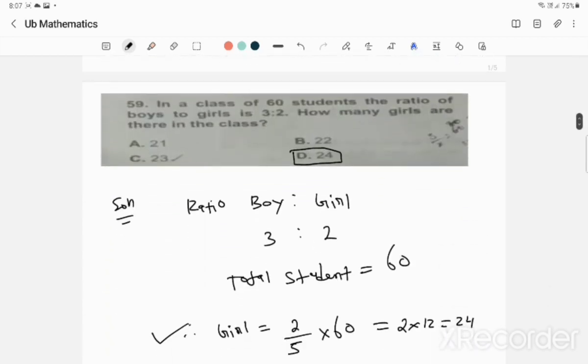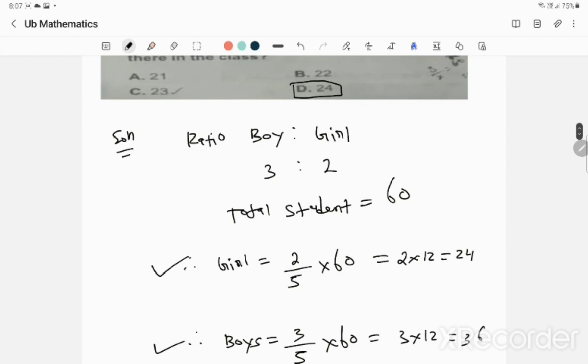Question 59: In a class of 60 students, the ratio of boys to girls is 3 to 2. How many girls are there in class? The total students is 60. So girls are 2 out of 5, that is 2 by 5 of 60 students. If we cancel 5 into 60, we get 2 times 12.